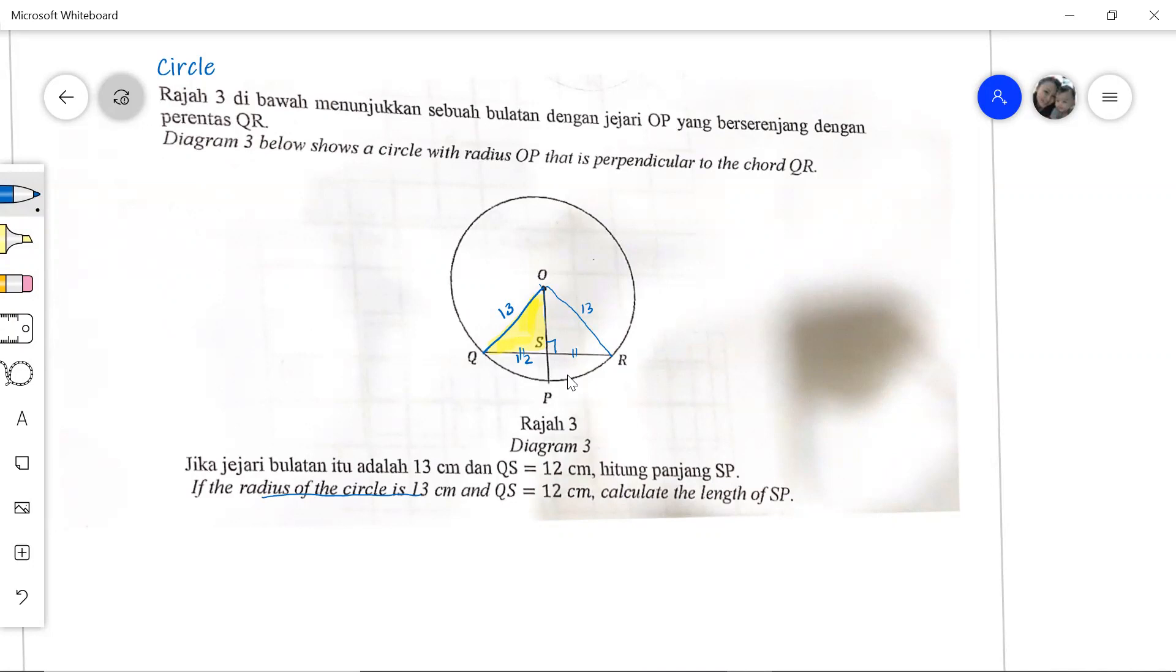So according to Pythagorean theorem, we can find OS. That is square of 13 minus square of 12 and then square root. Therefore we have 169 minus 144. That will be square root of 25, which is 5.